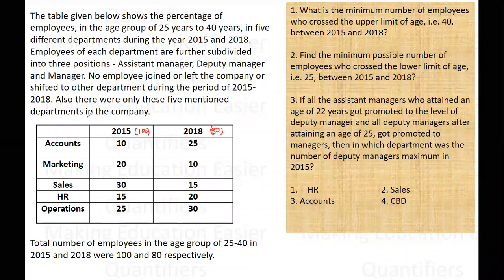Only these five departments are in the company. The table gives us the percentage of employees in the age group of 25 to 40 years. That means in the Accounts department, 10% were in this age group. In Marketing, 20% were in this age group. In Sales, 30% were in this age group, and so on.